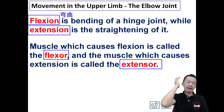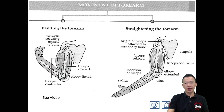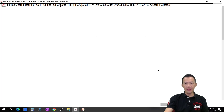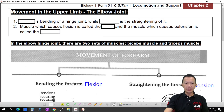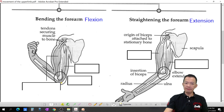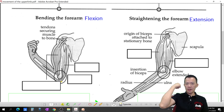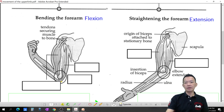How do we move our upper limbs? Our arms, our muscles. Okay, follow me. It's a very important point. So movement of the forearms — that is our upper limbs. Bending of the forearms is flexion. Then straightening of the forearms is extension.